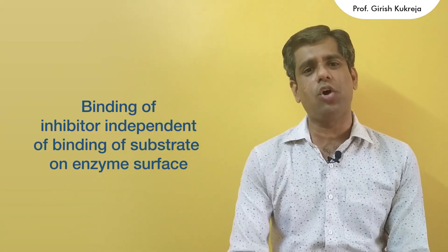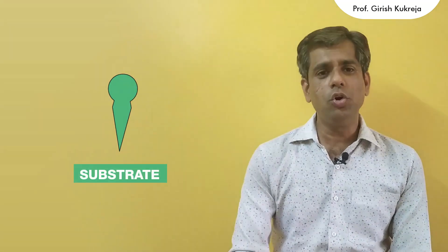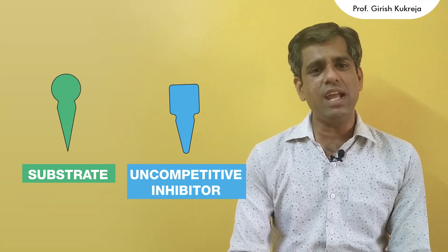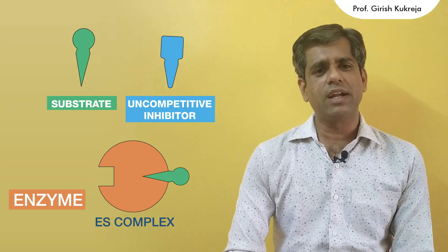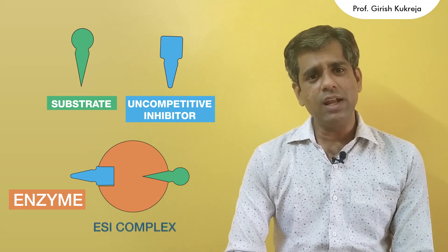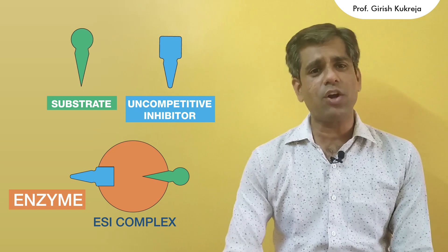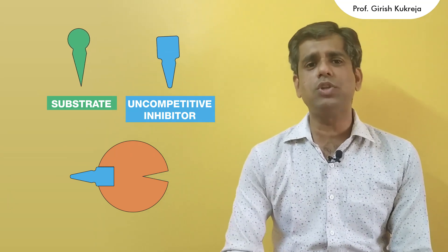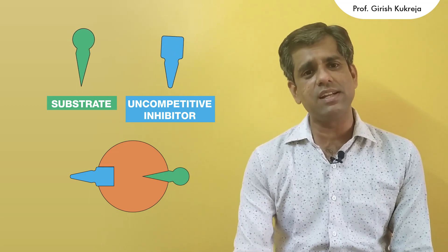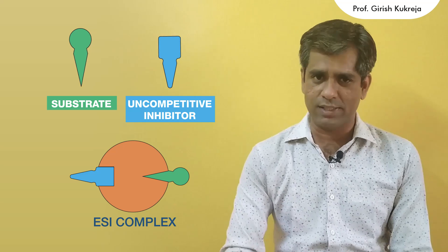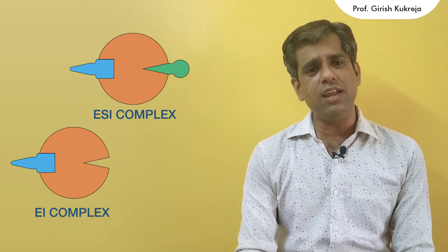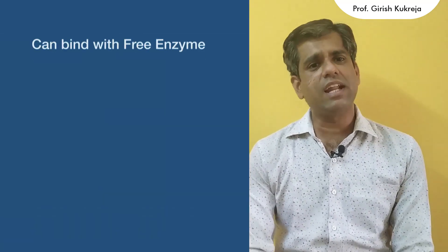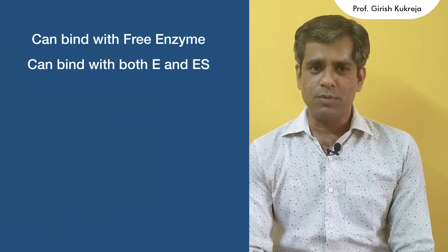A typical non-competitive inhibitor's binding on the surface of the enzyme is completely independent of the binding of the enzyme to the substrate. So a typical non-competitive inhibitor can bind either to the free enzyme — that is, it can bind with E to form an EI complex. Similarly, it can also bind to the ES complex, so ES combines with I to form an ESI complex. If the inhibitor has first bound to the enzyme, the substrate can again bind to this EI complex, again resulting in the formation of an ESI complex. To conclude, binding of a typical non-competitive inhibitor does not hamper or alter in any way the affinity of the enzyme towards the substrate, as it can bind the free enzyme or the bound enzyme — that is, the E or the ES complex.